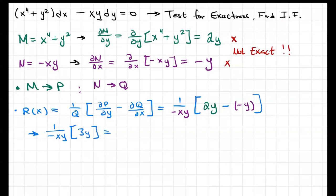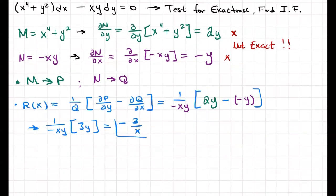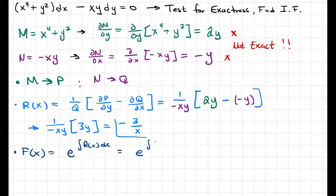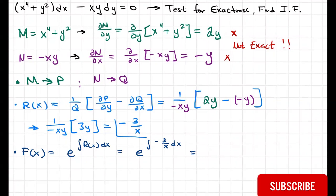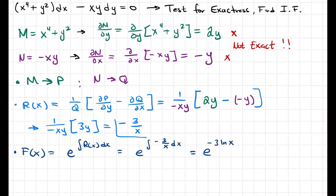That gives us one over negative xy times 2y minus negative y, which is one over negative xy times 3y. The y's cancel out, leaving negative 3 over x. Then f of x equals e to the integral of negative 3 over x dx. Factoring out negative 3, the integral of 1 over x is ln x, so we get e to the negative 3 ln x, which we rewrite as e to the ln of x to the negative 3, and the natural log and e cancel to give us x to the negative 3.